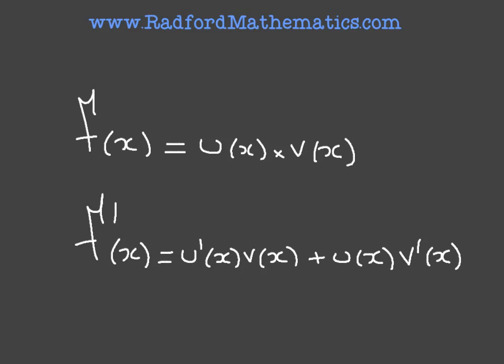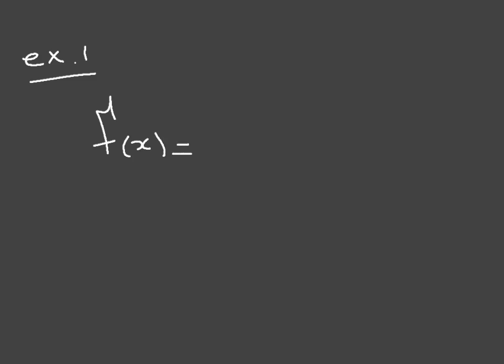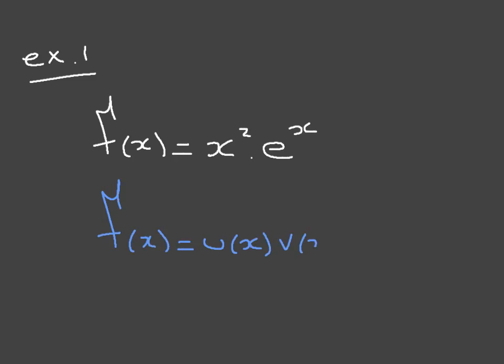Let's see how we can use the product rule for differentiating some functions. Consider the first example: we're given the function f(x) = x² times eˣ, and we're asked to differentiate it. The key thing to see here is that f(x) can be written as the product of two functions, u(x) = x² and v(x) = eˣ, the exponential function.